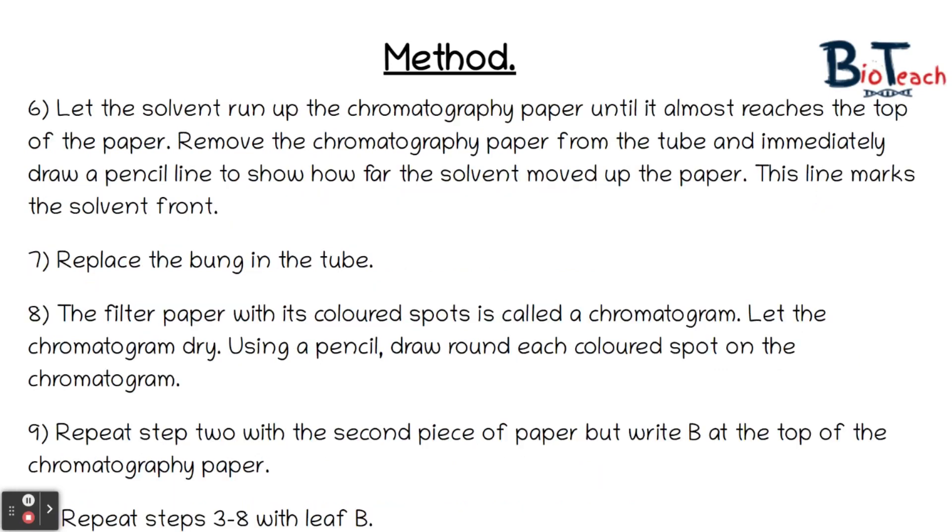The idea is to basically let the solvent run up the chromatography paper until it almost reaches the top of the paper. When it's almost there, maybe around a centimetre from the top, remove the chromatography paper from the tube and immediately draw a pencil line to show how far the solvent has moved up the paper. This marks what we call the solvent front, and it's a really important line to mark up otherwise you won't be able to do your RF calculations.